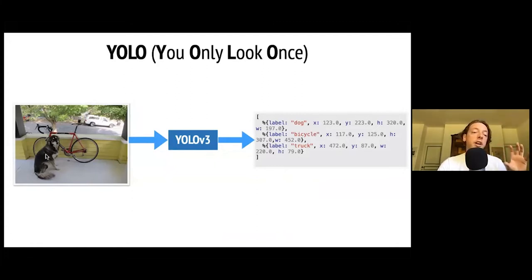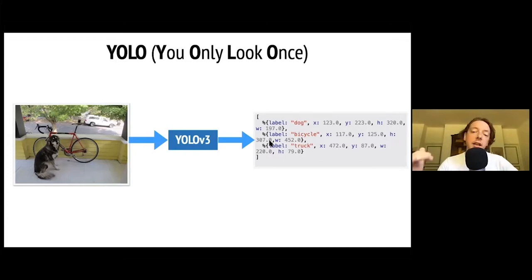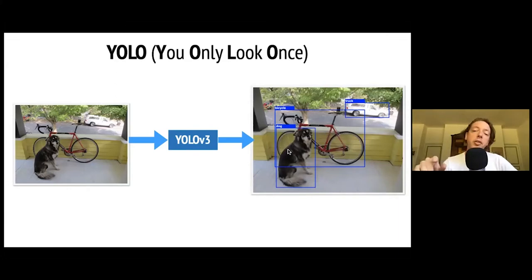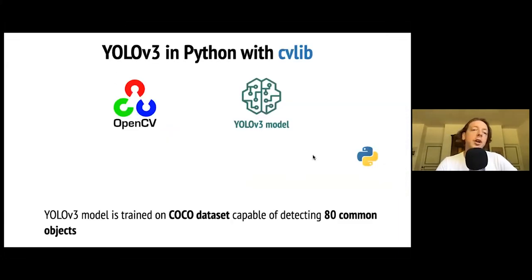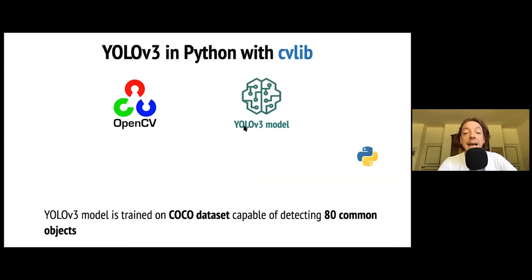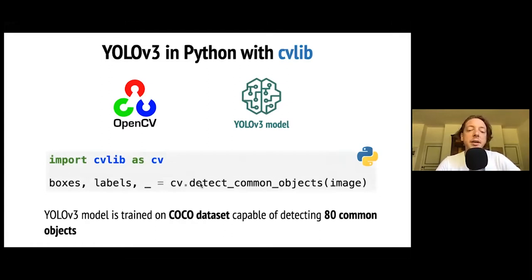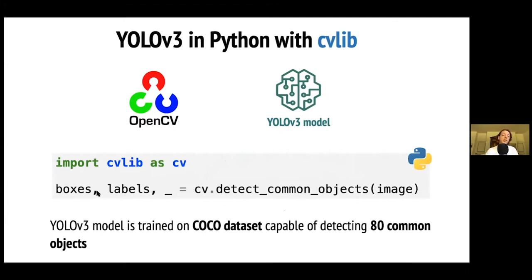The idea is to start with an image on the left and get the results in Elixir on the right — a list of objects — so we can render the bounding boxes and labels. We're not going to build YOLO ourselves. We're going to use CVlib, a Python high-level library that uses OpenCV under the hood and a pre-trained generic YOLOv3 model trained on the COCO dataset, capable of detecting 80 common objects. With just one function call, we get the boxes, coordinates, and labels.